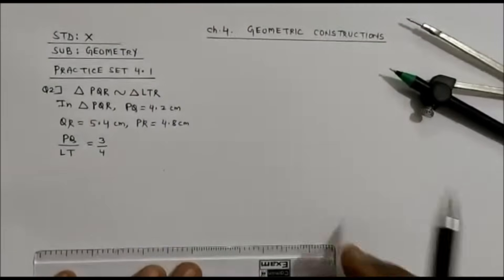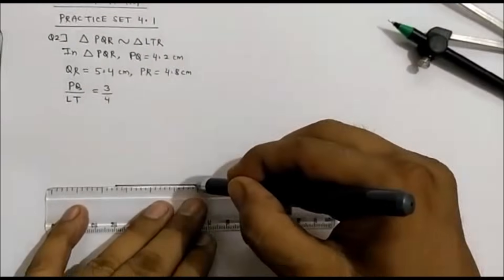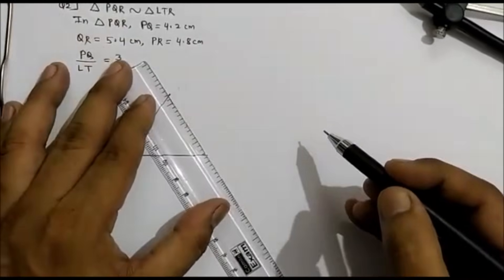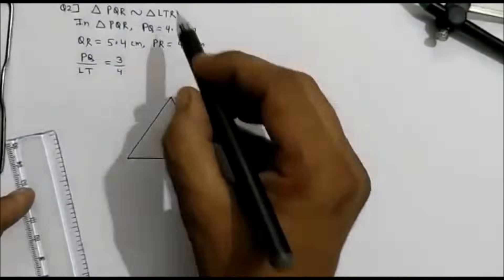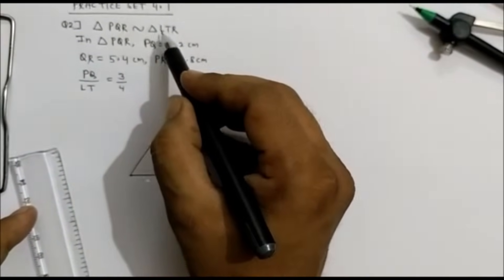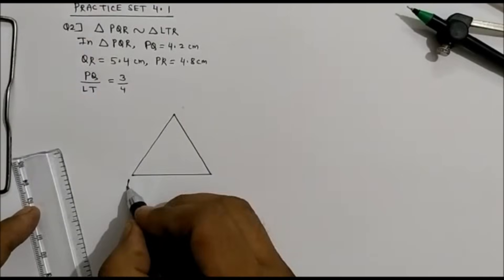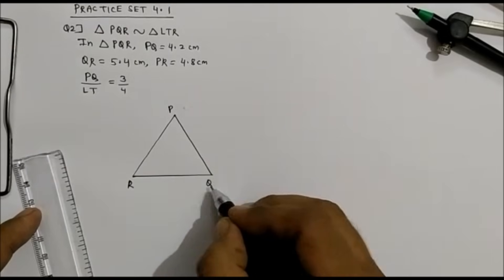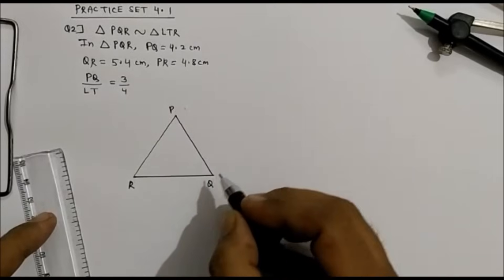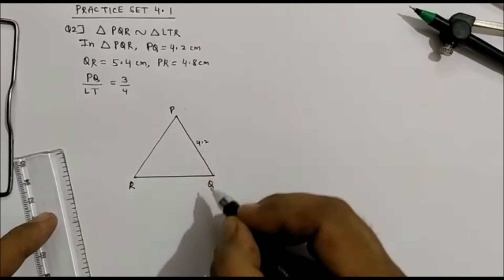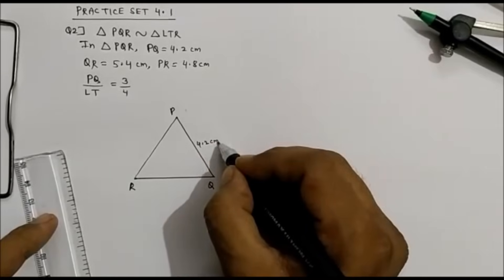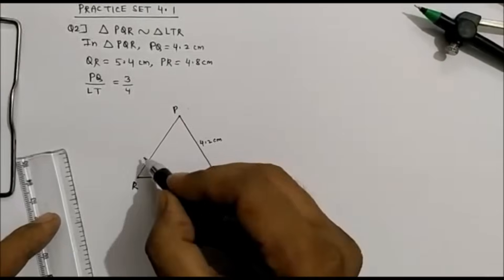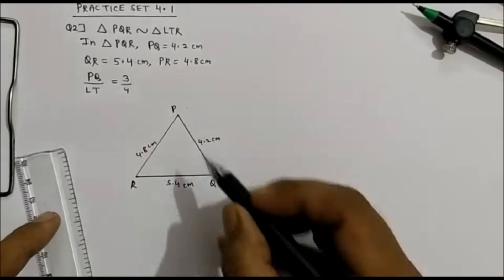So first we will draw the rough figure. Here we have triangle PQR — a point to be noted: between PQR and LTR, R is a common point. We are going to mark R here. PQR is a triangle where PQ is 4.2 cm, RQ is 5.4 cm, and PR is 4.8 cm.